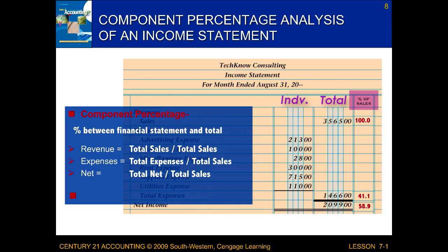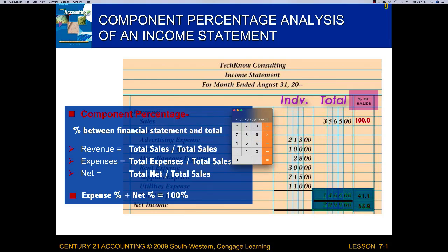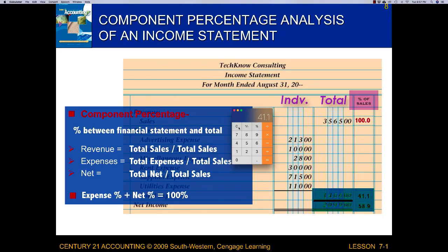A way to double-check: whatever percentage you're finding should equal 100%. In this case, sales should be 100%. The other two — whichever you're not finding — should add up to 100%. Here, my expense percentage of 41.1 and my net income percentage of 58.9 should equal the 100% of sales. And 41.1 plus 58.9 does equal 100.